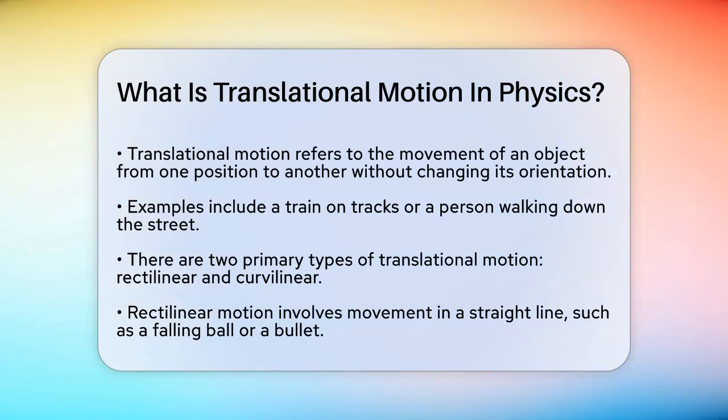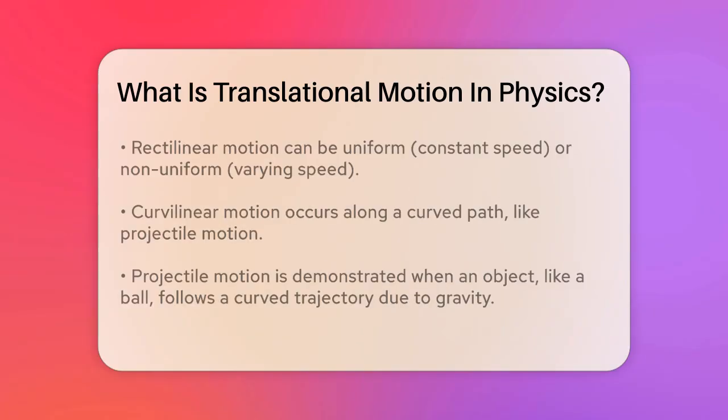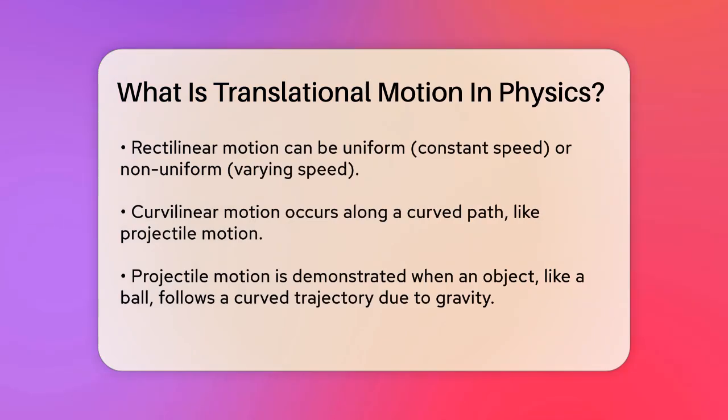There are two main types of translational motion: rectilinear motion and curvilinear motion. Rectilinear motion happens when an object moves in a straight line. For example, a ball falling from a cliff or a bullet fired from a gun follows a straight path. This type of motion can be either uniform, where the object moves at a constant speed, or non-uniform, where the speed varies over time.